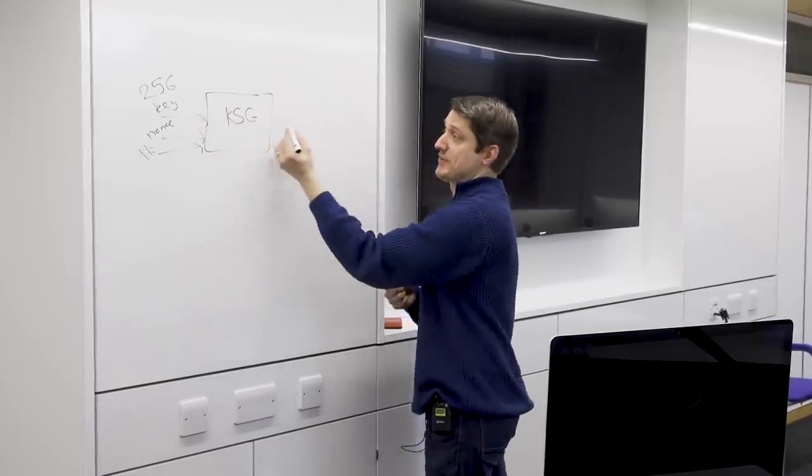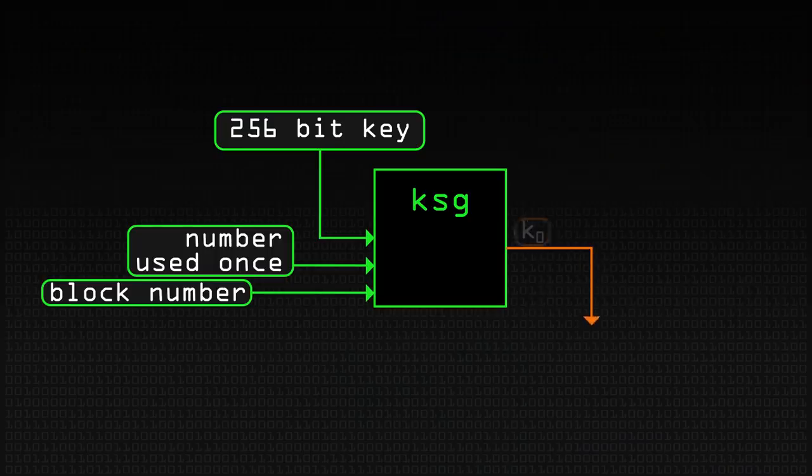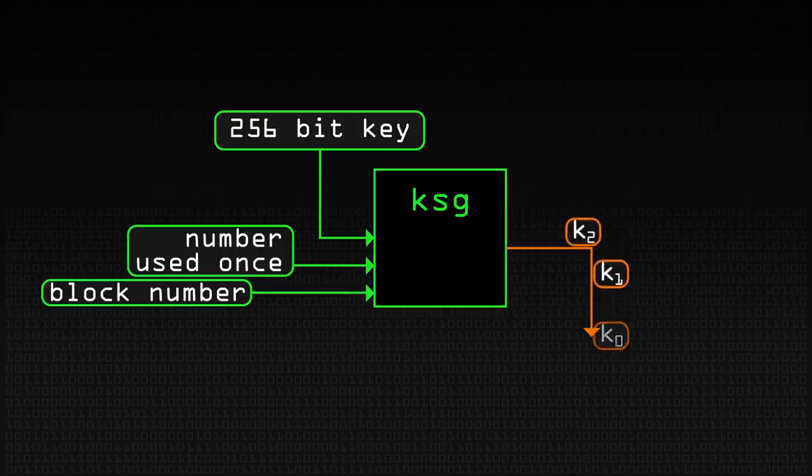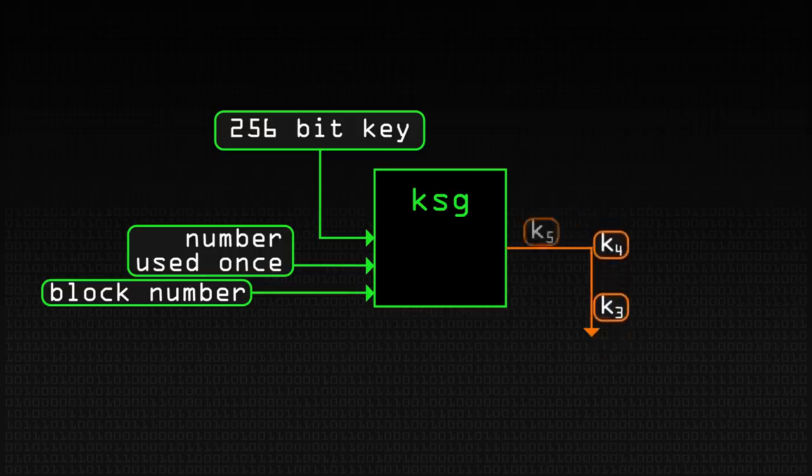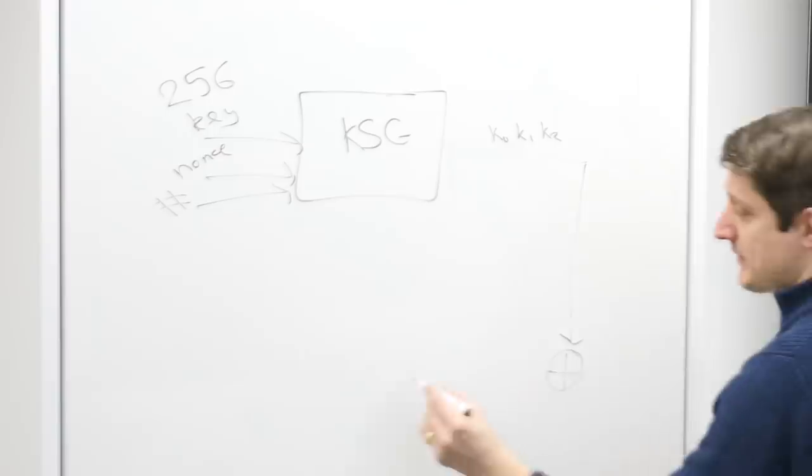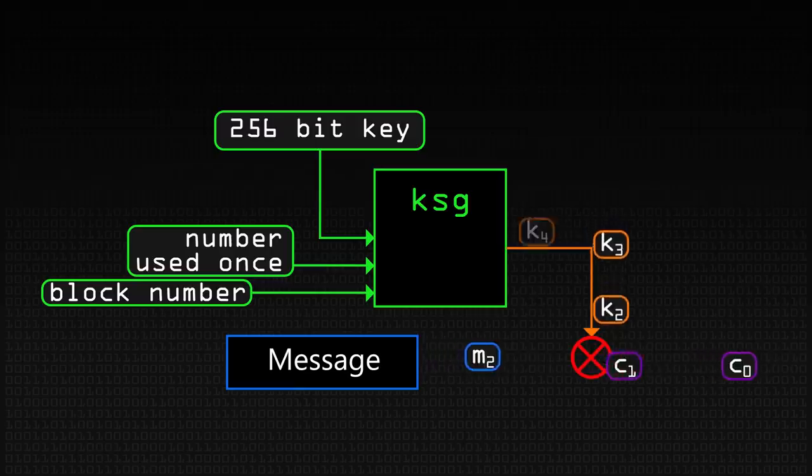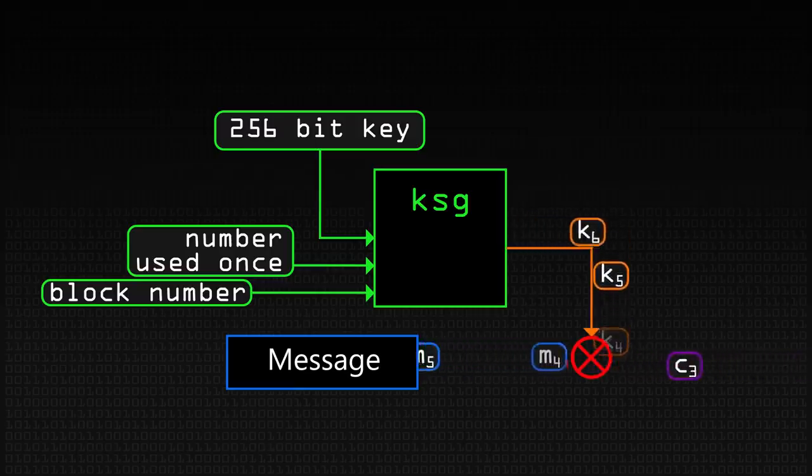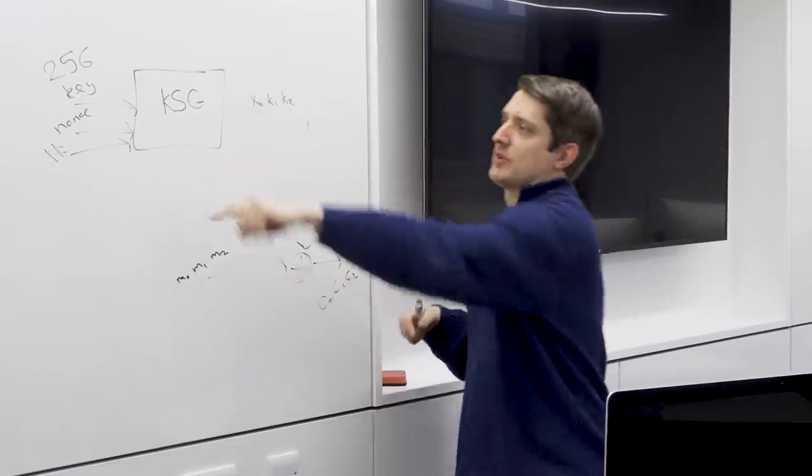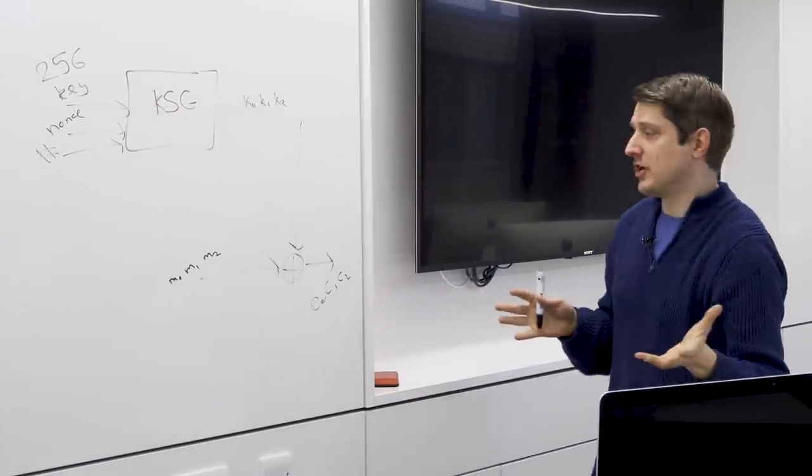That allows us to jump halfway through a file if we want to. Based on this, this iterates and produces a series of key bits. So K0, K1, K2. And we XOR that with our message, M0, M1, M2. And out comes our ciphertext. So this is, in general, how a stream cipher works. These are specific to ChaCha.